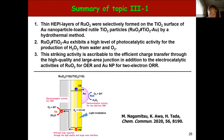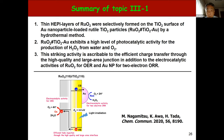Let me summarize topic 3. Thin heteroepitaxial layers of ruthenium oxide were selectively formed on the TiO2 surface of gold-nanoparticle-loaded TiO2 particles via hydrothermal method. Ruthenium oxide/TiO2/Au exhibits a high level of photocatalytic activity for the production of hydrogen peroxide from water and oxygen. This striking activity is ascribable to efficient charge transfer through the high-quality and large-area junction, in addition to the electrocatalytic activity of ruthenium oxide for oxygen evolution reaction and gold nanoparticles for 2-electron oxygen reduction.